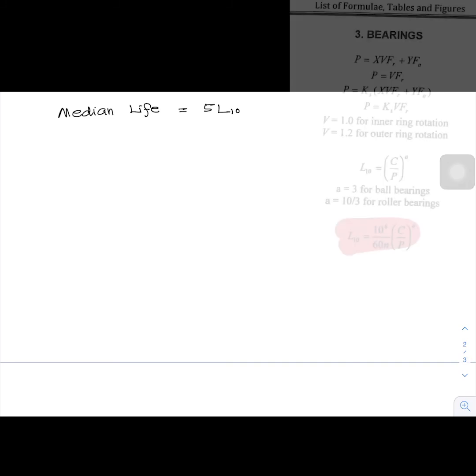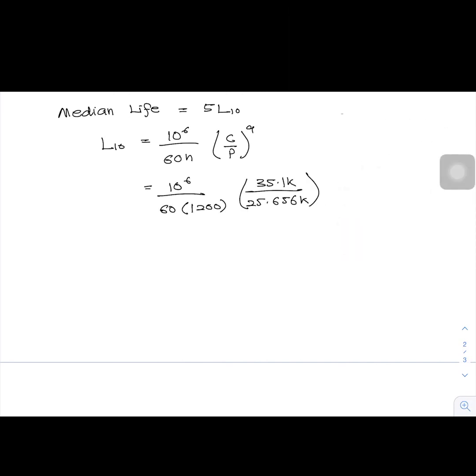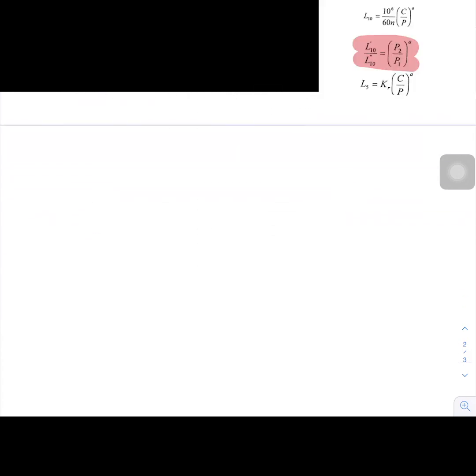Next, the second question is to calculate median life in hours. Median life is 5 times the rating life of bearing. So, we have to calculate the rating life in hours. The rating life is 35.565 hours. So, the median life is 177.825 hours.